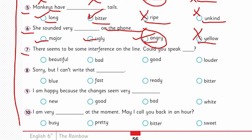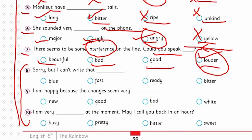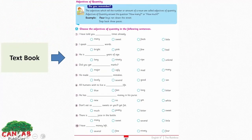The seventh one: 'There seems to be some interference on the line, could you speak ___?' — referring to a call where the voice is not coming through clearly. Options are beautiful, bad, good, or louder. The person is requesting could you speak — yes, he's asking to speak louder because there is some interference on the line. So 'louder' is the quality here. I want you to choose the correct option for sentences eight, nine, and ten by yourself.